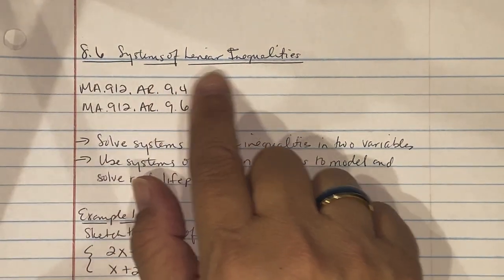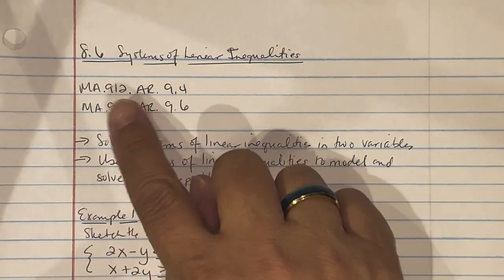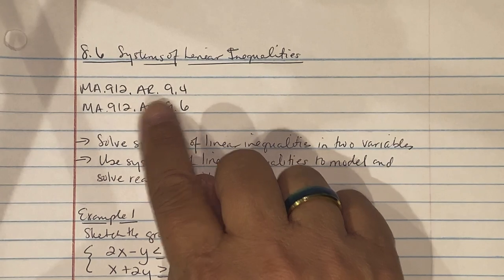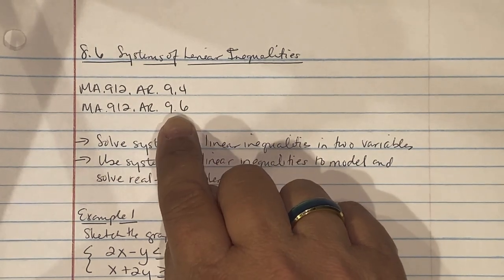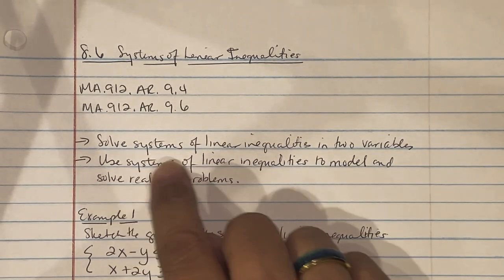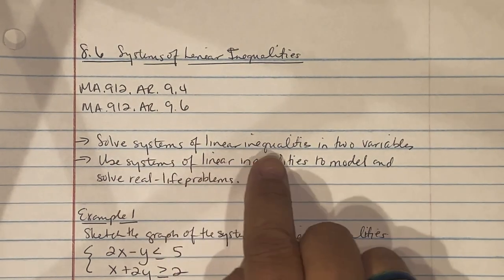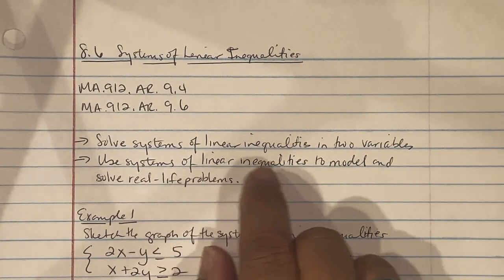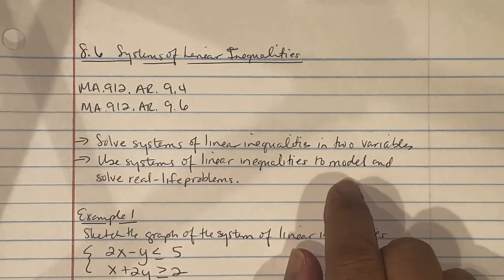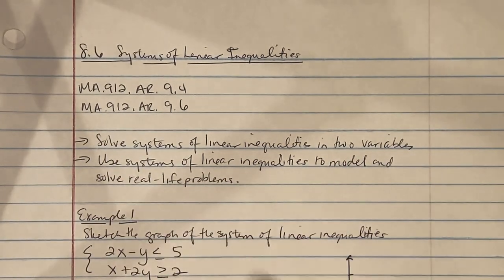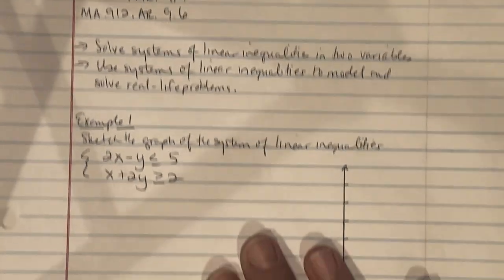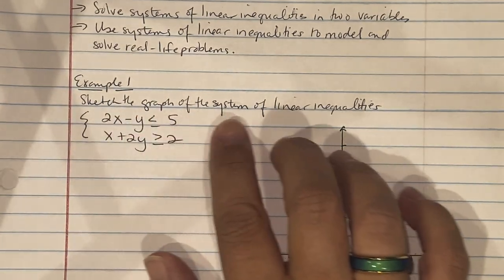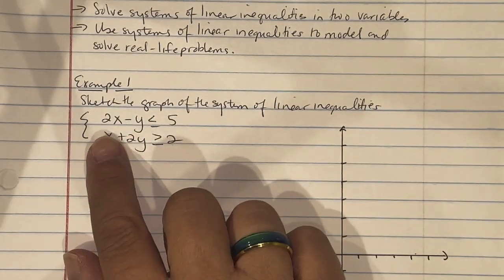This is 8.6, Systems of Linear Inequalities. We're going to use strands MA.912.AR.9.4 and 9.6. We're going to solve systems of linear inequalities in two variables and use systems of linear inequalities to model and solve real-life problems. In example one, we'll sketch the graph of the system of linear inequalities.